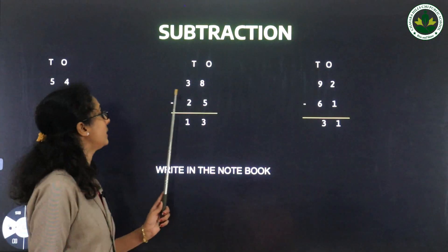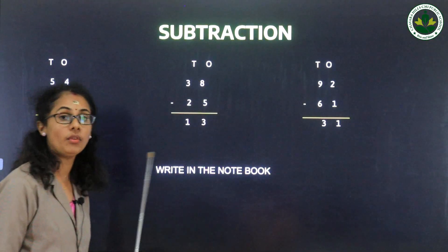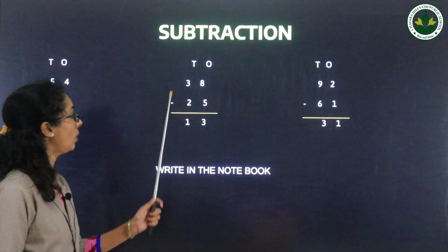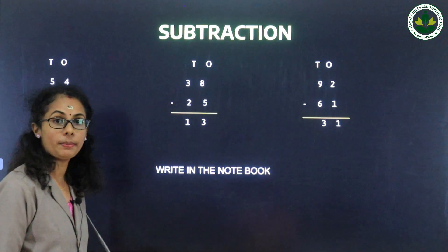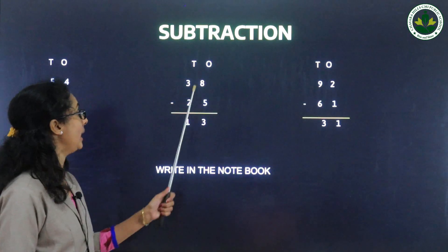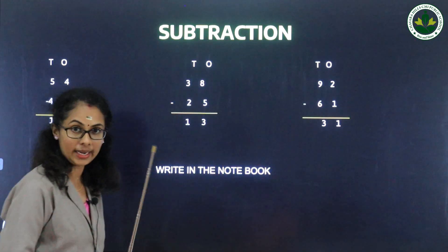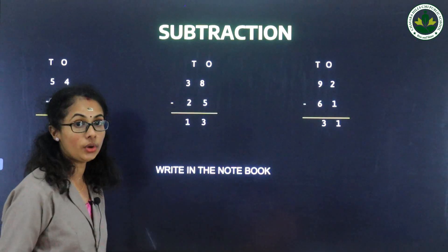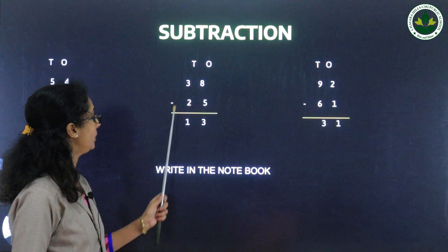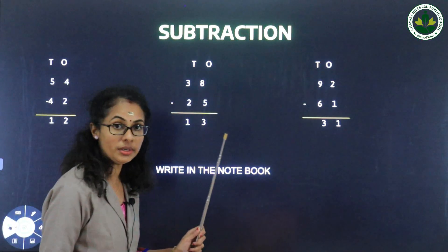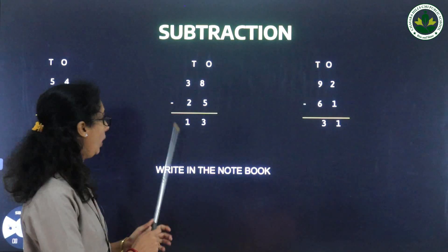Next question: 38 minus 25. Subtract ones place first: 8 and 5, so 8 minus 5. Check: 5 plus 1 equals 6, 5 plus 2 equals 7, 5 plus 3 equals 8. So 8 minus 5 equals 3. Then tens place: 3 minus 2, check 2 plus 1 equals 3, so 3 minus 2 equals 1.